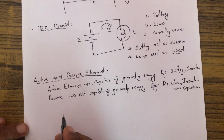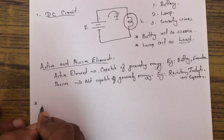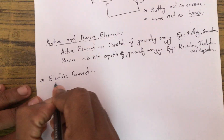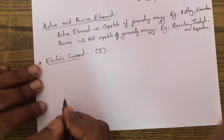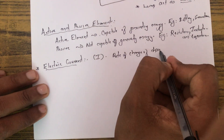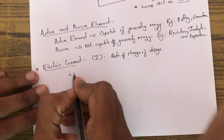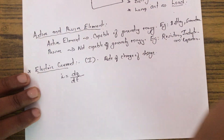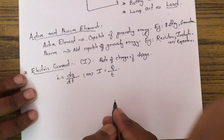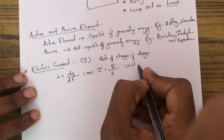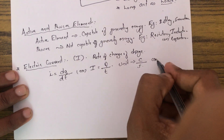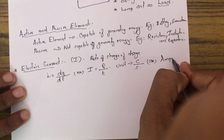Now let us discuss other basic quantities, starting with electric current. Electric current, represented by capital I, is the rate of change of charge: I = dq/dt, or I = Q/T. Its unit is coulombs per second, which is called the ampere, represented by capital A.